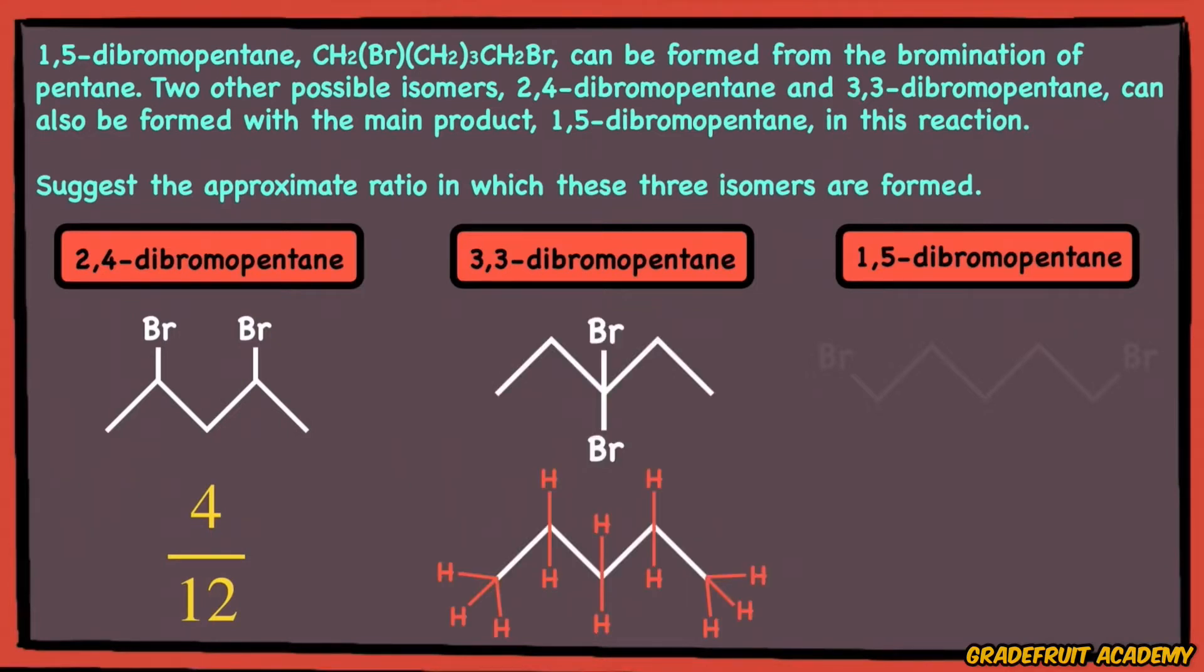For 3,3-dibromopentane, in order for the two bromine atoms to be attached to the 3rd carbon atom only, the bromine atoms have only 2 out of the 12 hydrogen atoms to choose from. Hence, the probability of this isomer being formed is 2 out of 12.